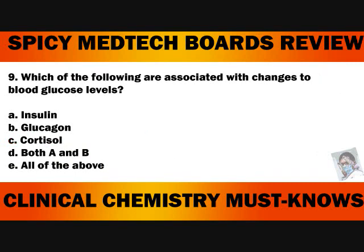Number 9. Which of the following are associated with changes to blood glucose levels? A. Insulin. B. Glucagon. C. Cortisol. D. Both A and B. Or letter E. All of the above. The answer to number 9 is letter E, All of the above.